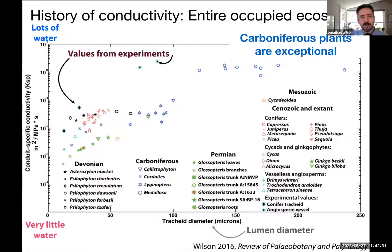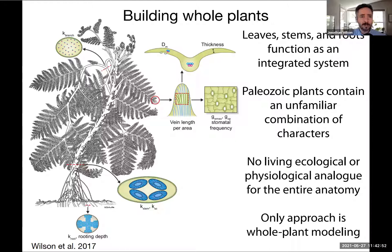Putting these results in evolutionary context, on a stem level, Carboniferous plants really are exceptional. The top right portion of the hydraulic ecospace is mostly vacant until the evolution of angiosperms in the mid-Mesozoic. In an effort to scale this understanding up to whole plants, we've been working to learn about complete plant systems. We know plants are an integrated system of organs — leaves, stems, and roots — functioning together. However, we can't simply pull defined modern plant types off the shelf and use them, because Carboniferous roots, stems, and leaves are too different; they kind of break our anatomical rules from modern ecosystems.